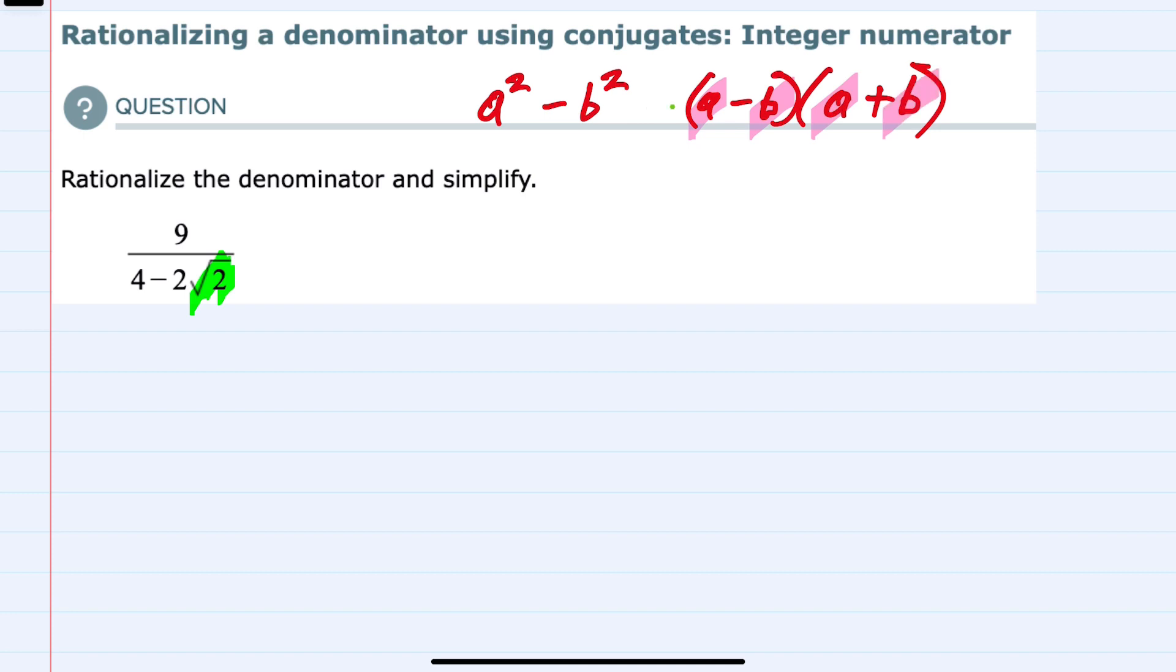So working backwards, that means that if I had the right-hand side here, a minus b times a plus b, it would be equivalent to a squared minus b squared.